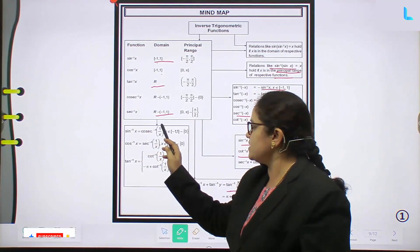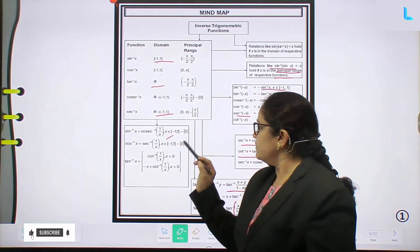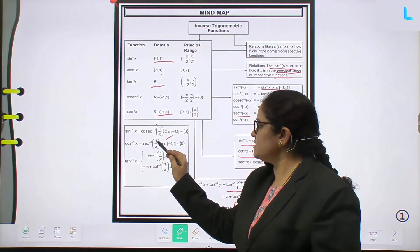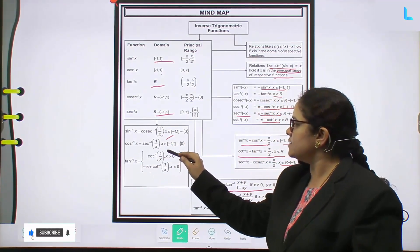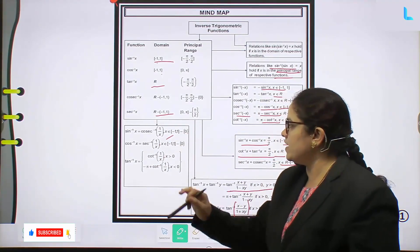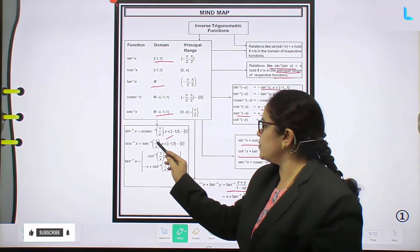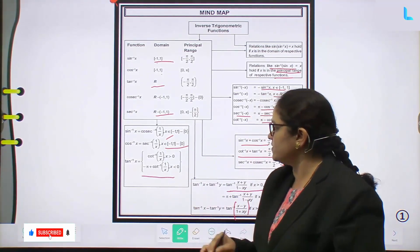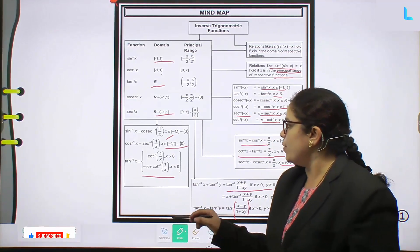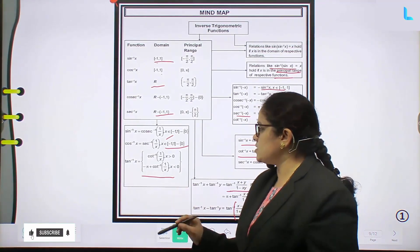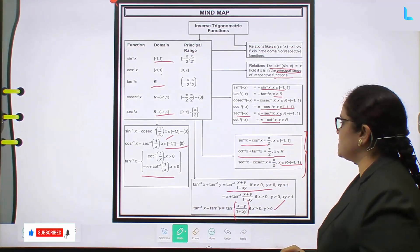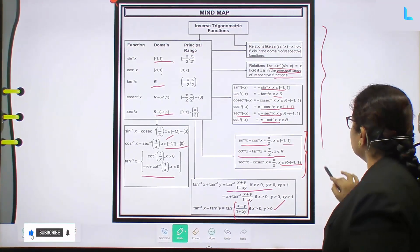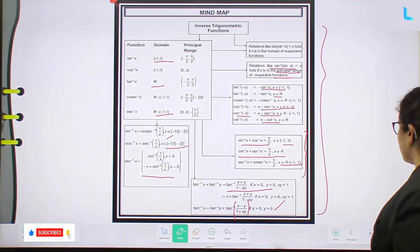Sin⁻¹x equals cosec⁻¹(1/x), where x belongs to the respective range. And cos⁻¹x equals sec⁻¹(1/x), the reciprocal, where x belongs to the range. And tan⁻¹x equals cot⁻¹(1/x) when x > 0, and equals -π + cot⁻¹(1/x) when x < 0. This is the important mind map in inverse trigonometric functions.